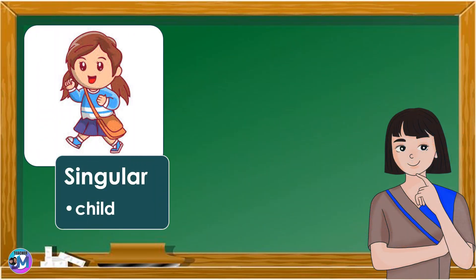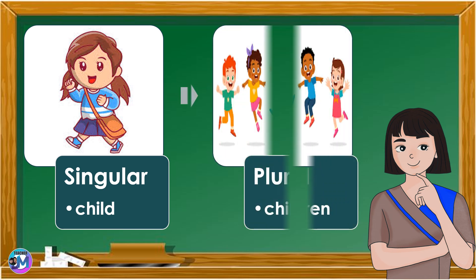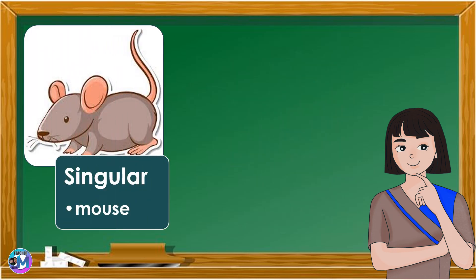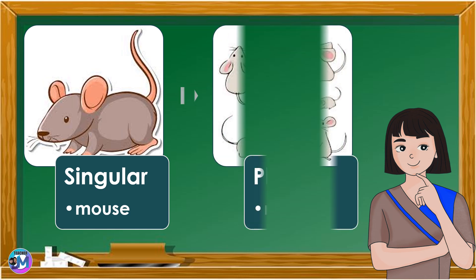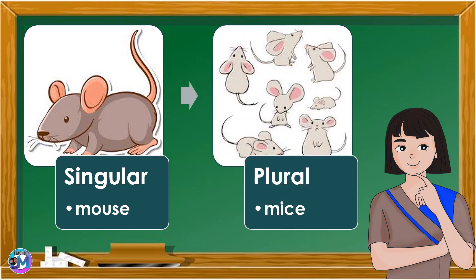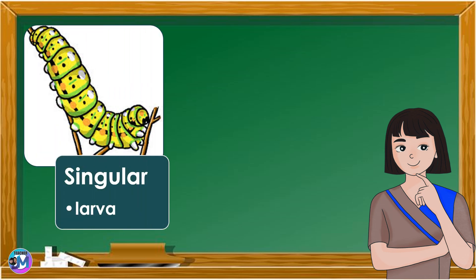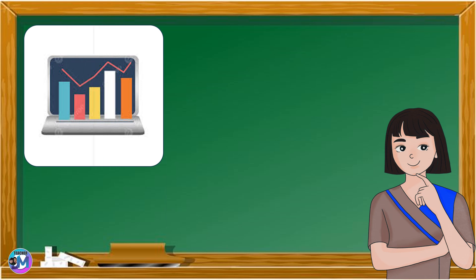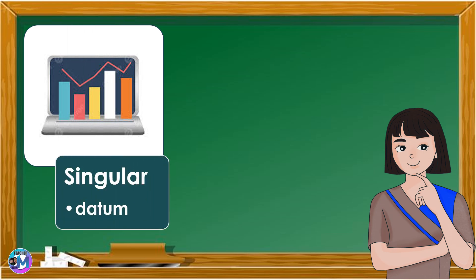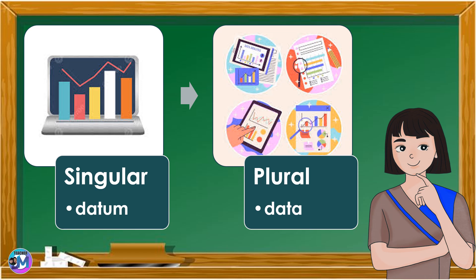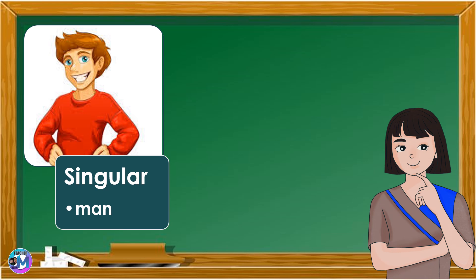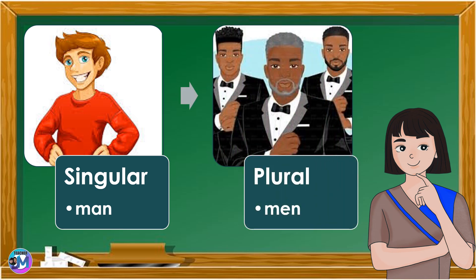Singular noun: Child — its plural noun is Children. Singular noun: Mouse — its plural noun is Mice. Singular noun: Larva — its plural noun is Larvae. Singular noun: Datum — its plural noun is Data. Singular noun: Man — its plural noun is Men.